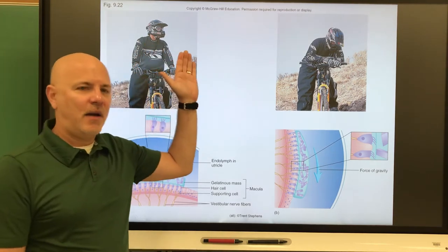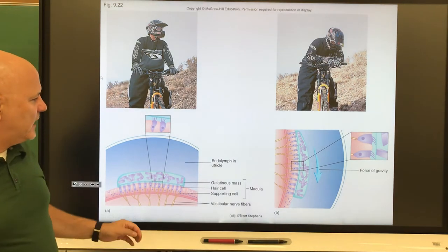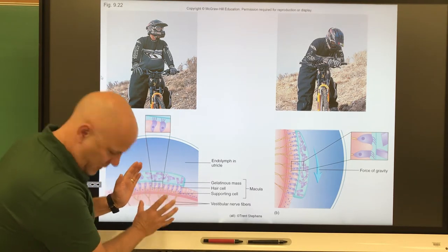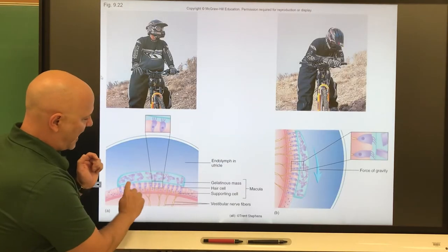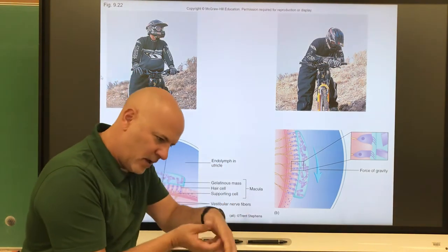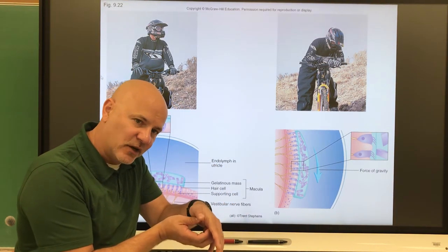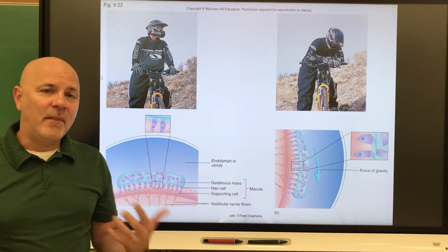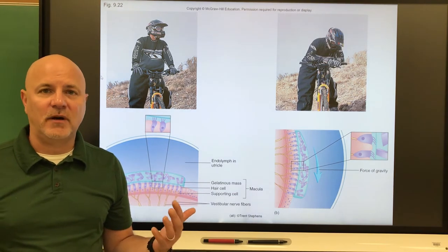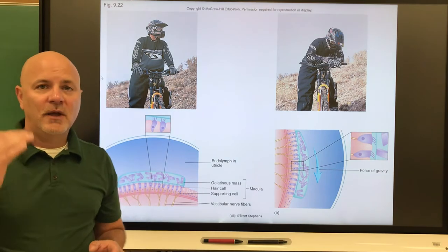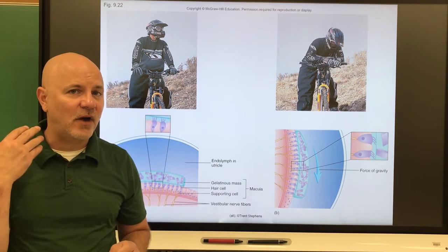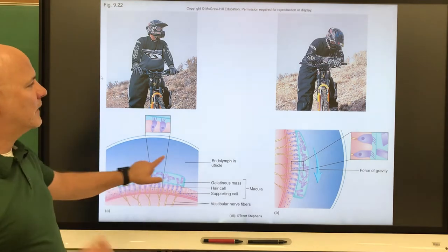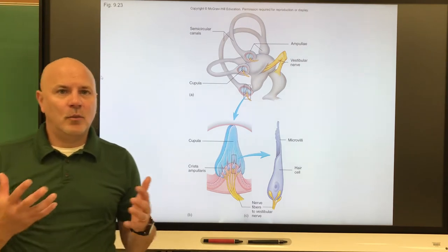If you have head movement — say this person has their head up and then turns it down — the macula is going to move. Gravity pulls on that gelatinous material, which triggers those hair cells, and those hair cells send a signal to the brain for body adjustment via the cerebellum. It should also be noted that your eyes and stretch receptors in your neck are also involved in sensing whether your body or head is tilted.